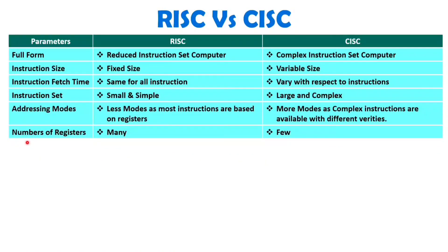When we talk about the number of registers, RISC will have many registers inside the CPU, while CISC has fewer registers. The reason is RISC architecture is based on register execution only, so you need many registers. CISC architecture is based on the complexity of instructions, so you don't need many registers — you can store data in memory and operate along with instructions. With RISC, almost all operations are performed with respect to registers.